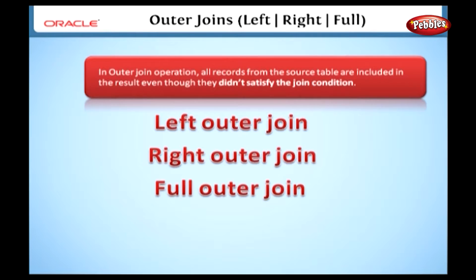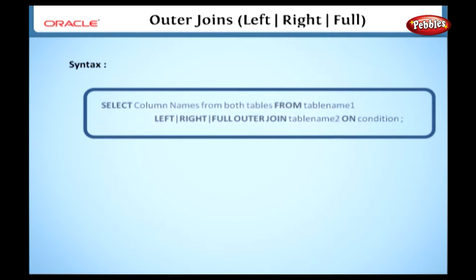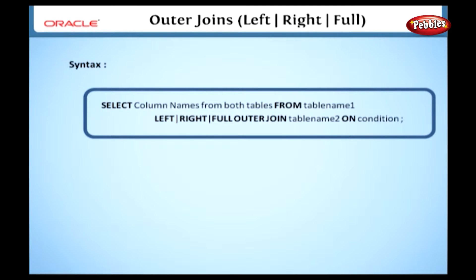Before we get to know the different types, we will see the syntax. Select column names from both tables, from table name 1, left, right, or full outer join, table name 2, on condition. In this syntax, column names specify the names of the columns to be selected. Here we can specify any type of outer join.